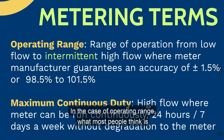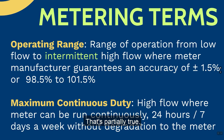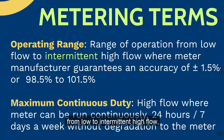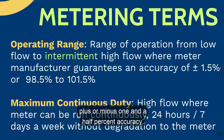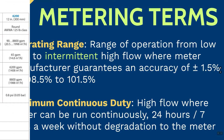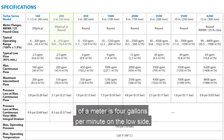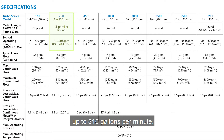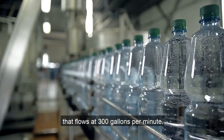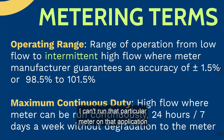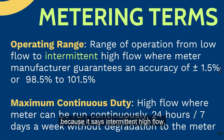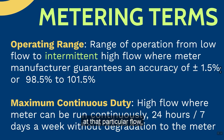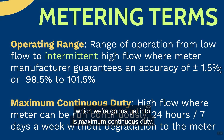In the case of operating range, most people think this is where the meter should operate from low to high. That's partially true. What the manufacturer normally states is this is the range of operation from low to intermittent high flow where the meter is guaranteed plus or minus one and a half percent accuracy. For example, if a meter's operating range is four gallons per minute up to 310 gallons per minute, and a customer application flows at 300 gallons per minute continuously, I can't run that meter on that application — because the 310 GPM figure refers to intermittent high flow. That leads to the next term: maximum continuous duty.